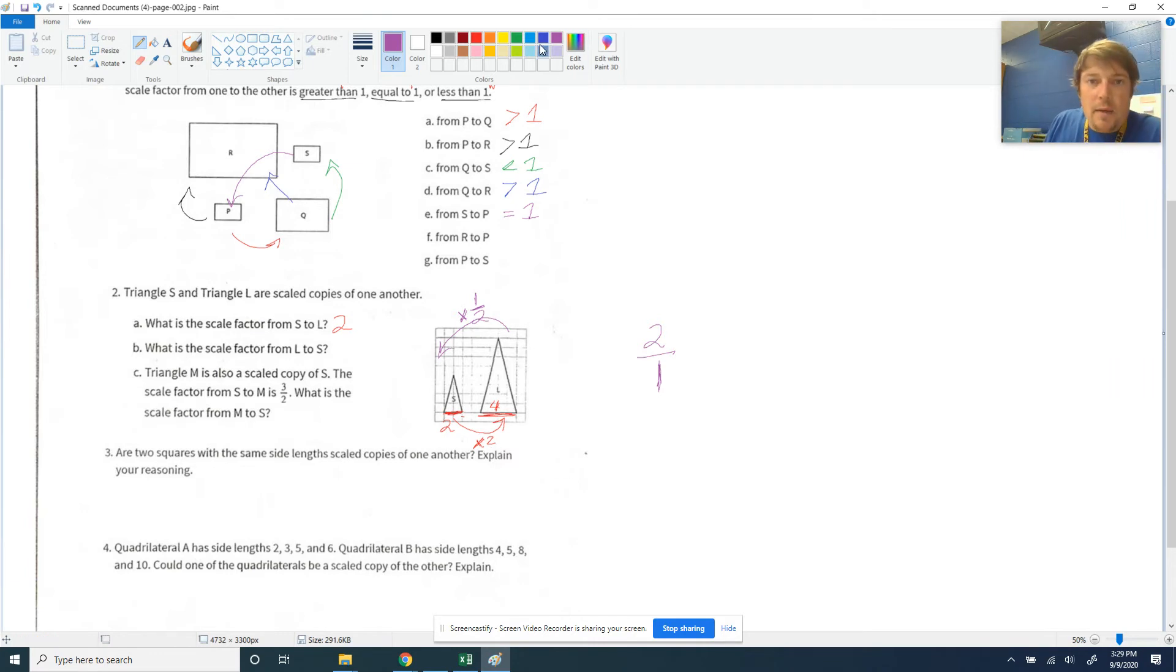Now part C is going to have you imagine that they had another triangle on here. Triangle M. It's been scale copied, and it probably would look something like this if I was to draw it. It's been scale copied by a factor of three halves, which means that it's one and a half times bigger, which is why it's kind of between what the original one was and this one.